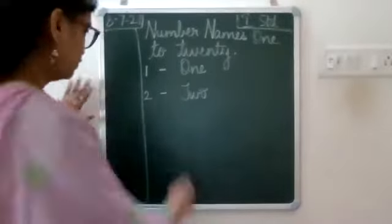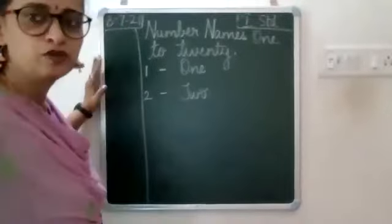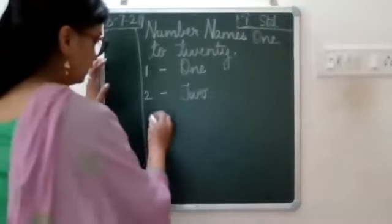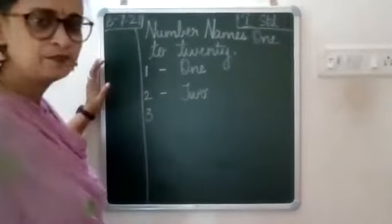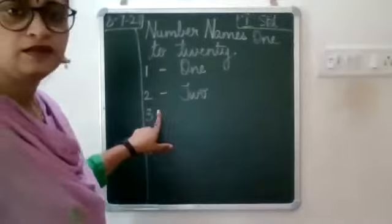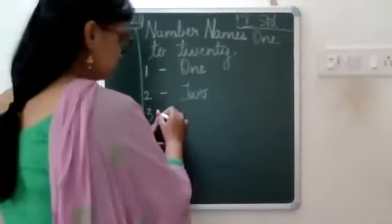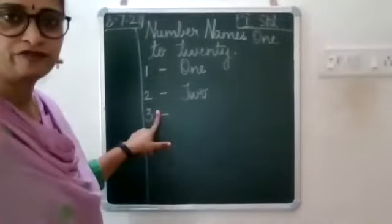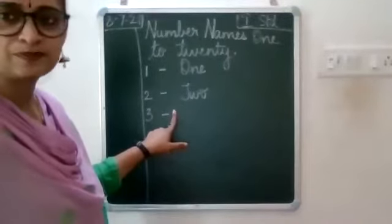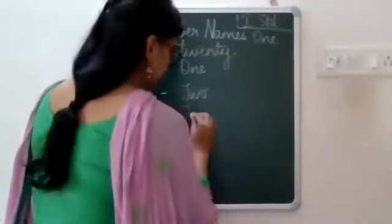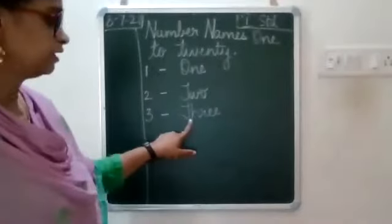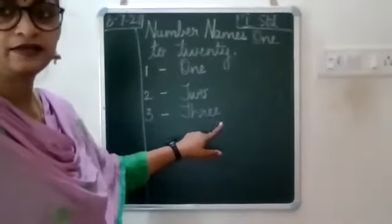Very good Andrew. Then again leave one line after every number. Leave a line, write THREE. Leave one finger space, put a small dash or hyphen, then again leave one finger space, write capital T-H-R-E-E, three.